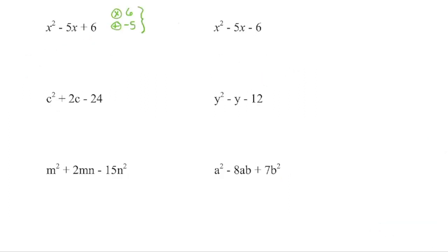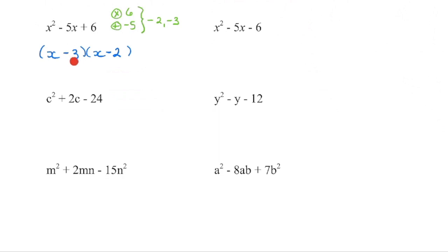In our next trinomial, we're looking for two numbers that multiply to get positive 6 and add to get negative 5. If this is a negative 5, we know that a negative times a negative is going to give us a positive value. So both of those numbers will be negative — they are negative 2 and negative 3. We set up our binomials: x times x gets us back to x squared. We place negative 2 and negative 3. Quickly FOIL it out: x squared, negative 2x minus 3x gives us that negative 5x, and a negative 3 times a negative 2 is positive 6.